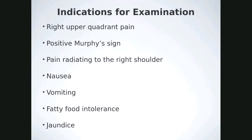Gallbladder indications include right upper quadrant pain, a positive Murphy sign — which you must document; if you don't, it will be assumed negative — pain radiating to the right shoulder, nausea, vomiting, fatty food intolerance, and jaundice.